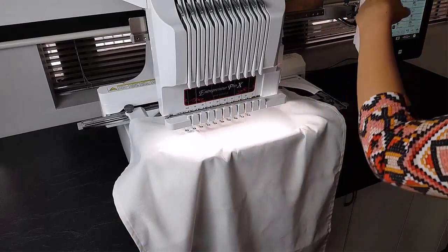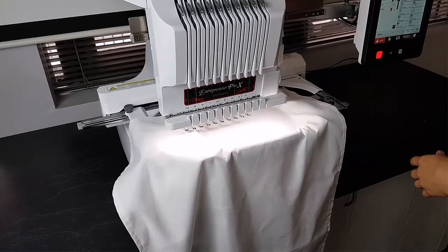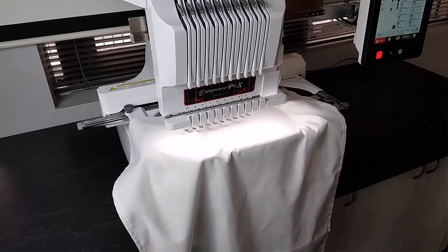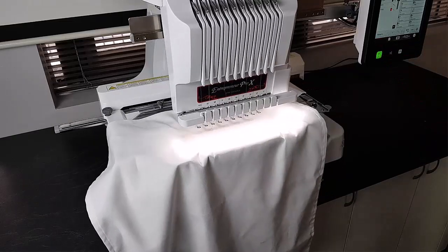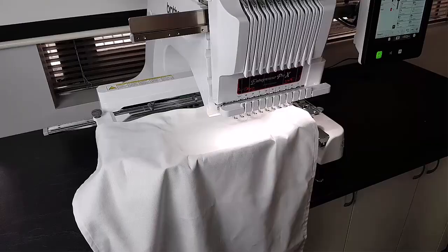To prevent the fabric being caught under the machine, flip the hoop by 180 degrees. At the same time, flip the design on the machine by 180 degrees. Now start the machine.